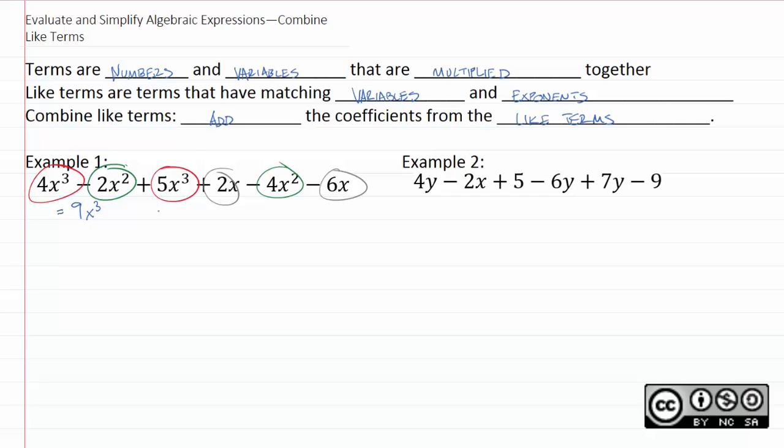Now let's look at the green terms. Negative 2x squared minus 4x squared. Again it's easy to combine those if you just imagine what they would look like without the variables there. Negative 2 minus 4 is negative 6. Therefore negative 2x squared minus 4x squared is negative 6x squared.